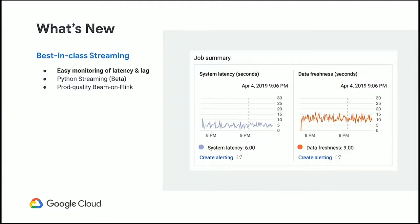Let's talk about what's new — everything here was released over the past three to four months. We are continuing to invest in our streaming capabilities and want to be the best-in-class streaming solution. One thing we launched recently was the exposure of two central metrics for streaming pipelines: system latency and data freshness (also called watermarks). These are now visible in your job details page, and you can also create alerts based on predefined thresholds.